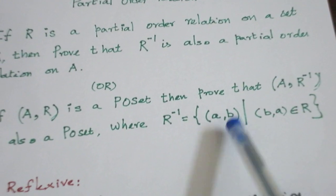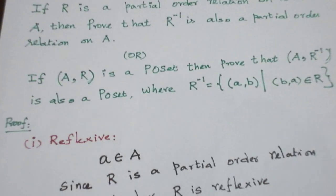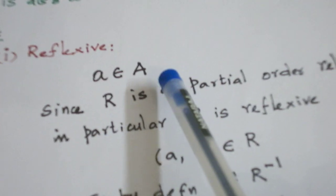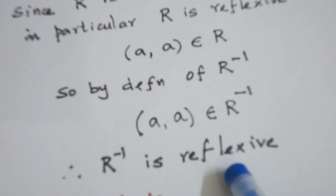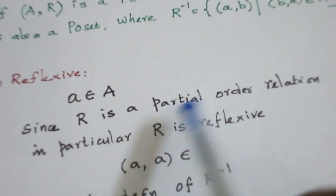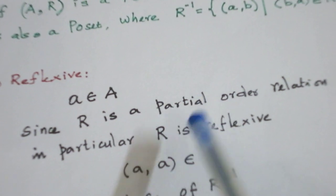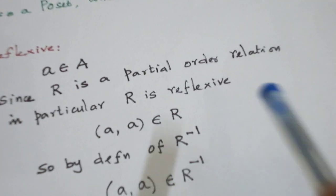R inverse is defined as the set of all ordered pairs (a, b) whenever (b, a) belongs to R. To prove it is a partial order relation, we have to prove reflexive, anti-symmetric, and transitive. So first let us start with the reflexive property. Let us take a is an element in the set A, and let us prove (a, a) belongs to R inverse, that is, R inverse is reflexive. Since a belongs to A and R is a partial order relation on that set, R is reflexive.